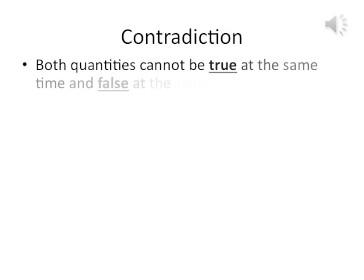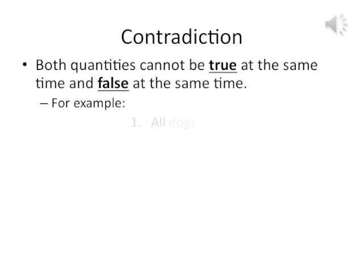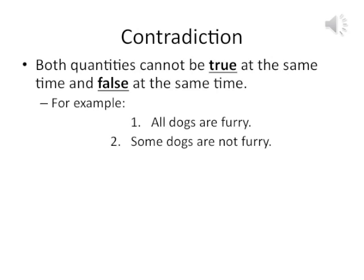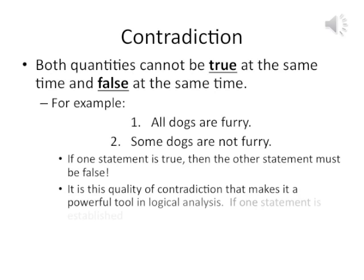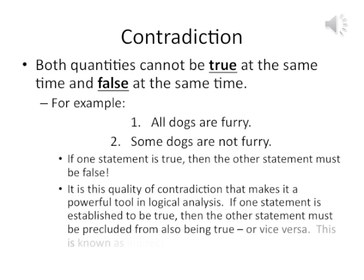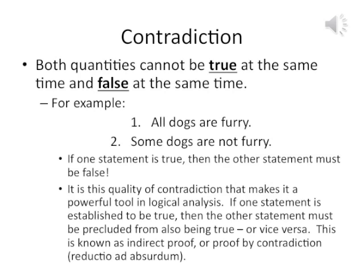Contradiction is what Aristotle bases the law of non-contradiction on. Both quantities cannot be true at the same time, and cannot be false at the same time. For example: 'all dogs are furry' and 'some dogs are not furry' — if one statement is true, then the other statement must be false. This is known as indirect proof or proof by contradiction — in Latin, reductio ad absurdum.